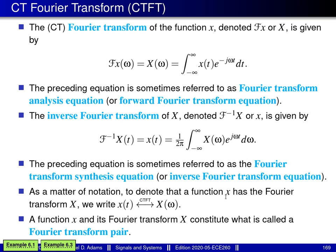As a matter of notation, sometimes we want a way to denote that a function little x has the Fourier transform capital X. We can denote this compactly using a double arrow notation, where the thing on the left of the double arrow is the original function little x, and the thing on the right side of the double arrow is the Fourier transform. As a matter of terminology, the function little x and capital X constitute what is called a Fourier transform pair.